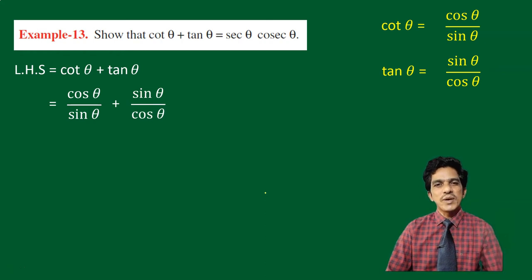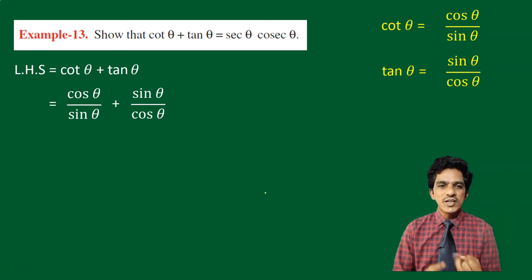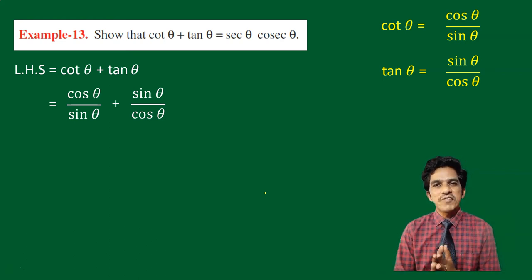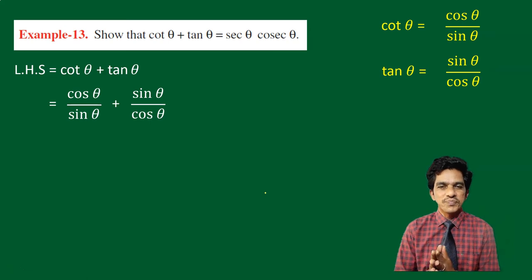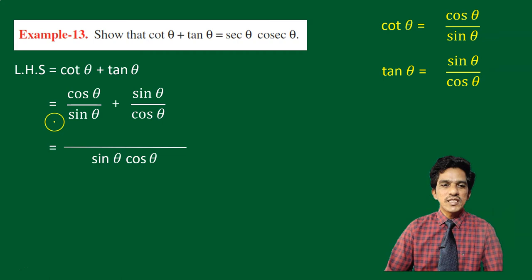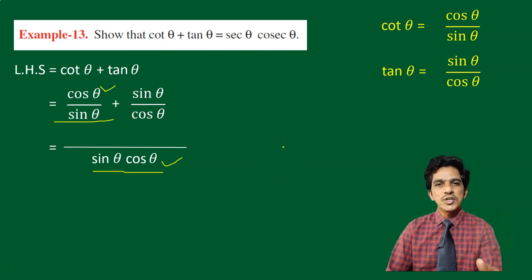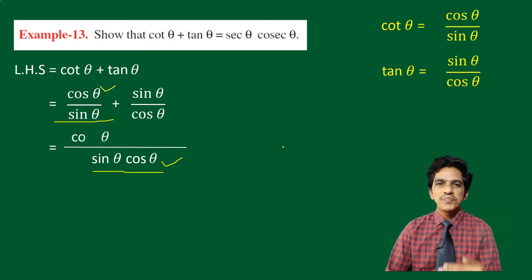Now we have two fractions. Whenever you want to add or subtract fractions, you have to find out their LCM. Here the denominators are sin theta and cos theta — they don't have any common factors, like 3 and 4 whose LCM is 12. So the LCM of sin theta and cos theta will be sin theta into cos theta. For the first fraction, the denominator is sin theta and the LCM is sin theta into cos theta, so we multiply the numerator by cos theta. Cos theta into cos theta gives cos square theta.